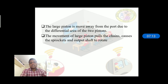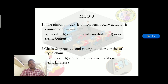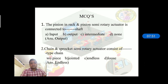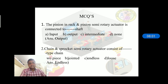Now we move to multiple choice questions. In this session we discussed chain and sprocket semi-rotary actuation and rack and pinion semi-rotary actuator. First question: the pinion in the rack and pinion semi-rotary actuator is connected to the output shaft. Second question: the chain and sprocket semi-rotary actuator uses an endless type chain.